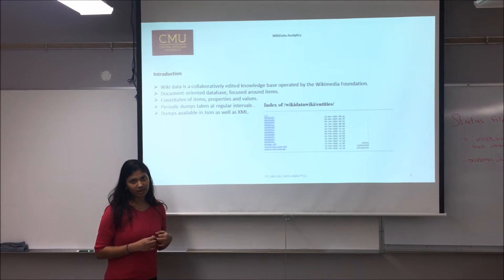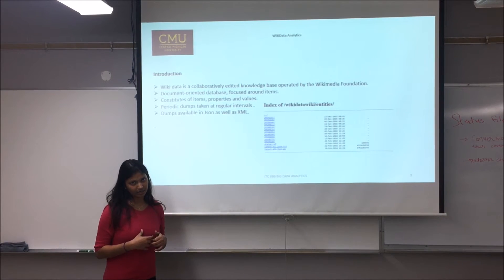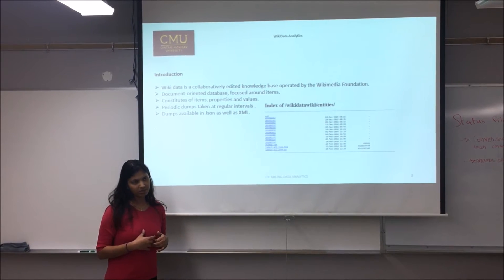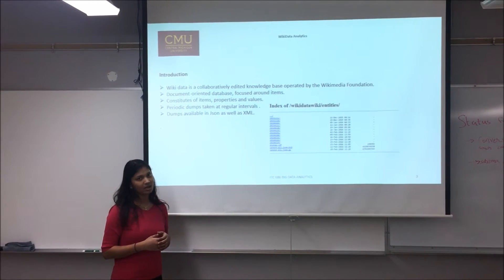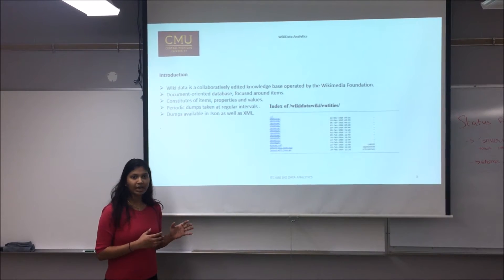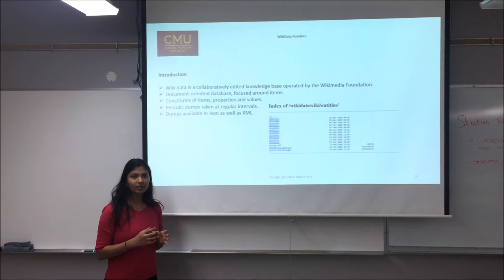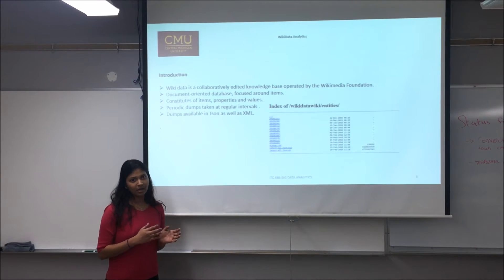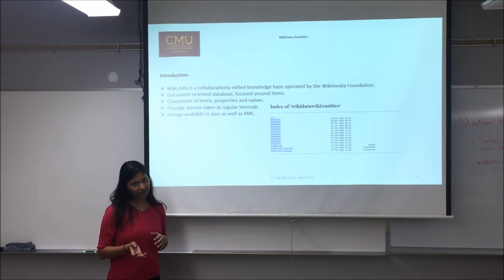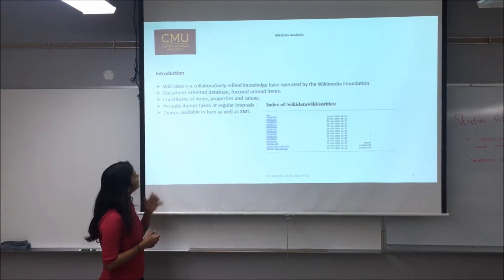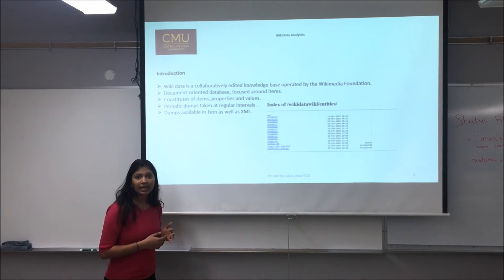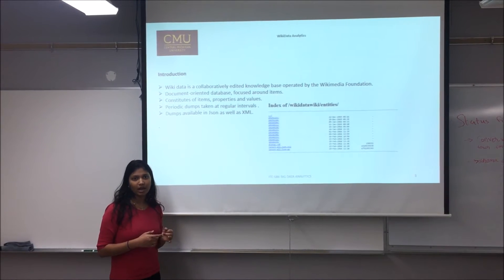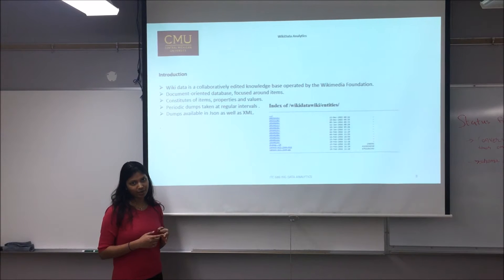Items would be the knowledgeable things which a user can query on Wikidata through Wikipedia as a user interface, and each item is associated with different properties and respective values. The dumps are available in JSON, XML, and RDF formats.